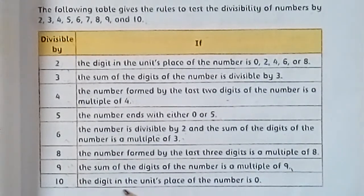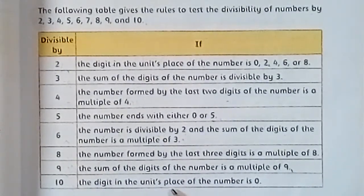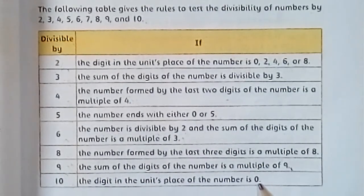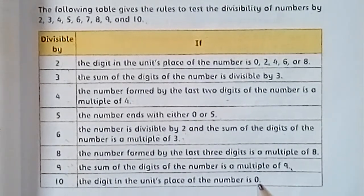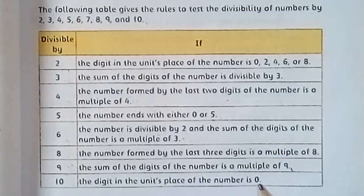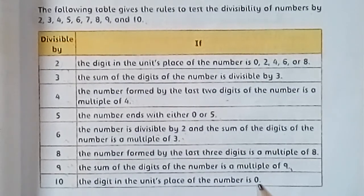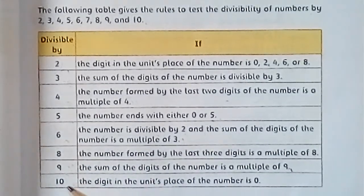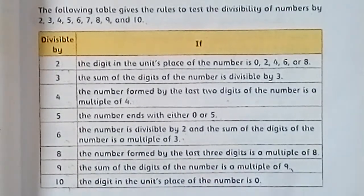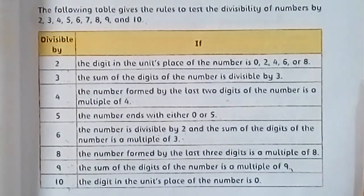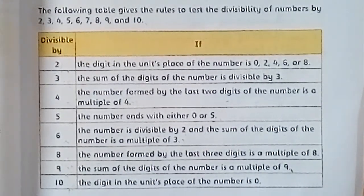The last one is divisible by 10. The digit in the units place of the number must be 0. If the units digit is 0, the original number is divisible by 10. So these are all the divisibility rules that we have studied.